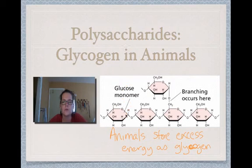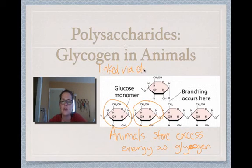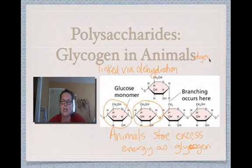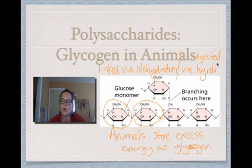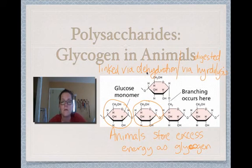These glucose molecules are all linked together via dehydration, and they are digested via hydrolysis — the same pattern we talked about in our similarities video. All polymers for all four of our macromolecules are made via dehydration and then broken apart or digested via hydrolysis.